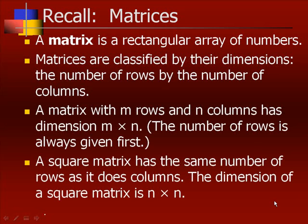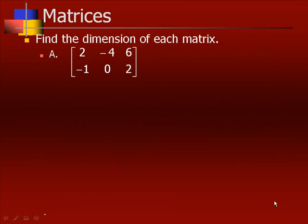A square matrix has the same number of rows as it does columns. The dimension of a square matrix is n by n. Now let's find the dimension of each matrix. This one has two rows and three columns, so this is a 2 by 3 matrix.